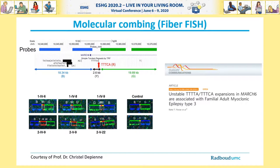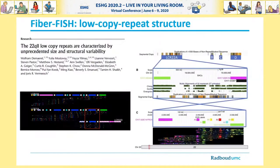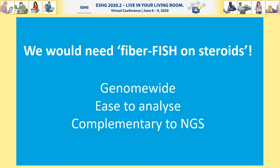A beautiful demonstration of the resolution power of FiberFISH comes from Christelle de Pienne, whose group identified an unstable repeat expansion in the gene MARCH6 as a cause for a specific type of epilepsy — patient samples show a much expanded repeat colored in red compared to controls. Another demonstration comes from the lab of Jovis Firmish, whose group showed that FiberFISH enables the resolution of low copy repeats of the 22Q11 locus.